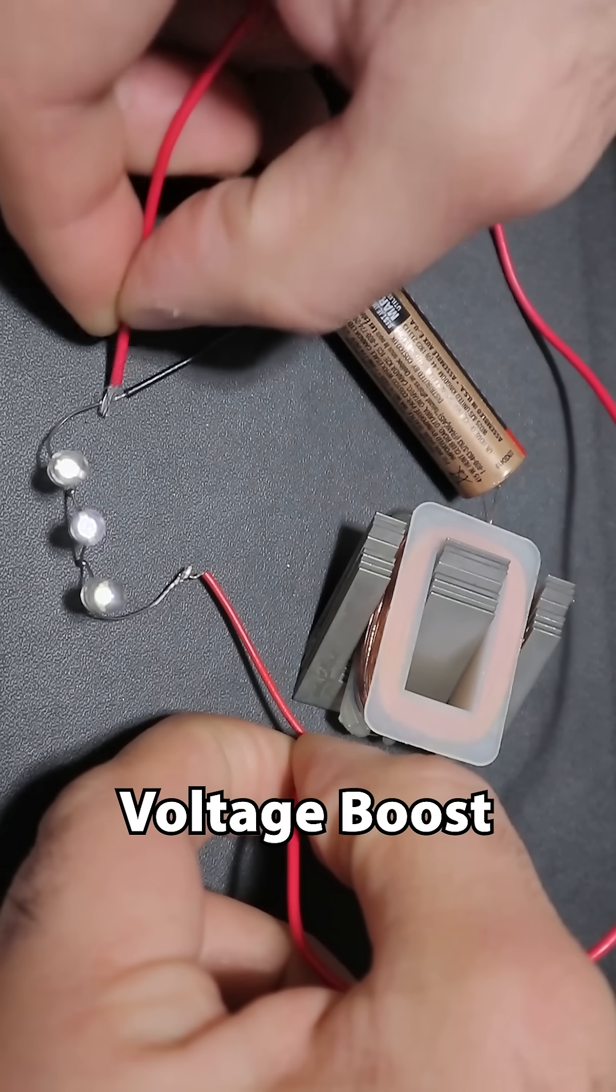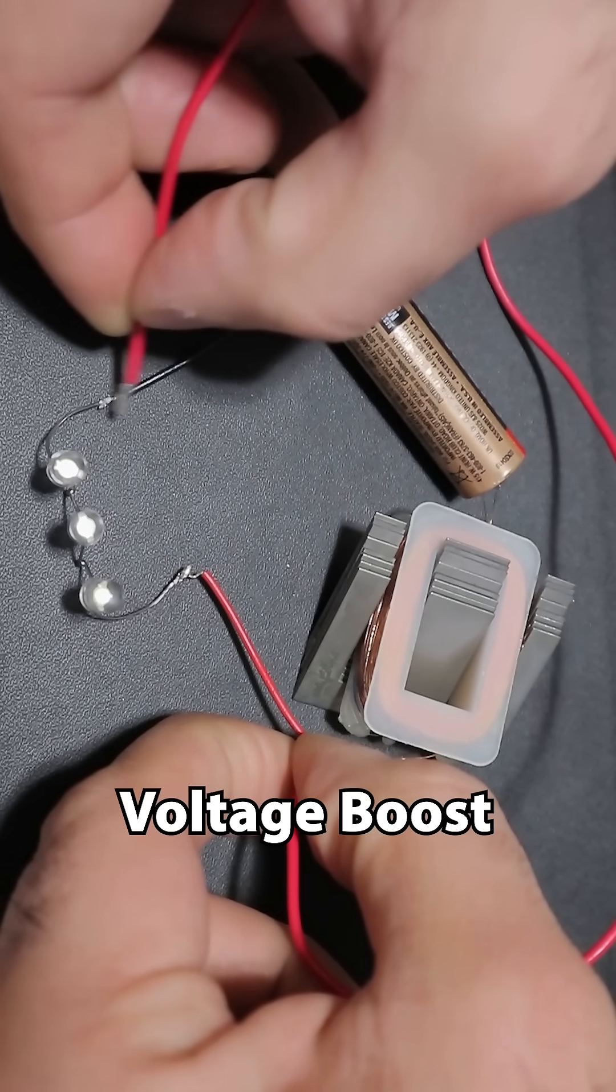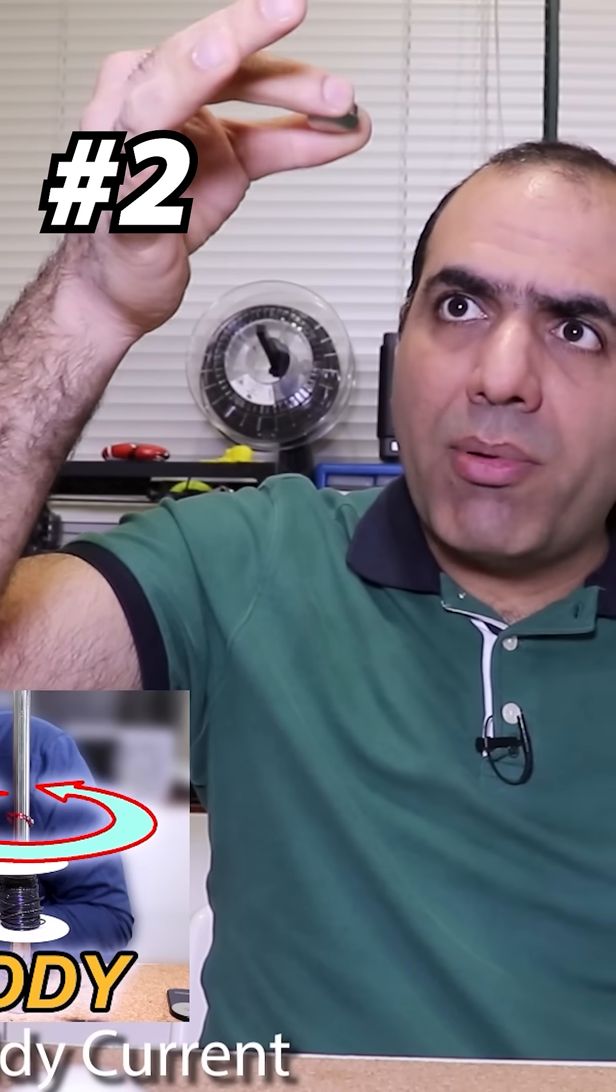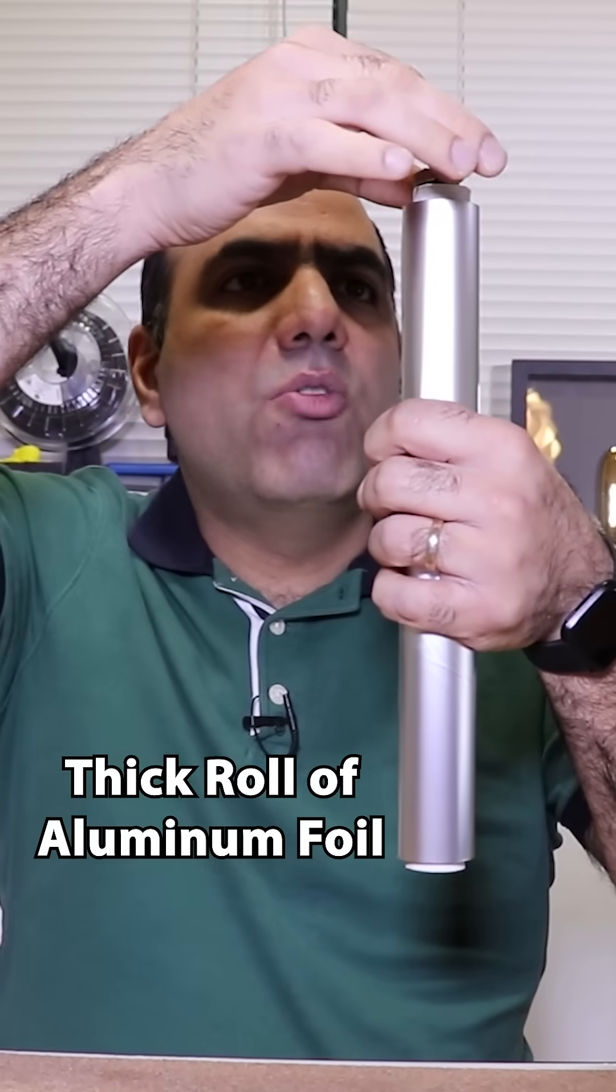BAM! I have 9 volt pulses across them and they turn on. Neodymium magnets drop like a rock in air, but if you drop them through a roll of aluminum foil,